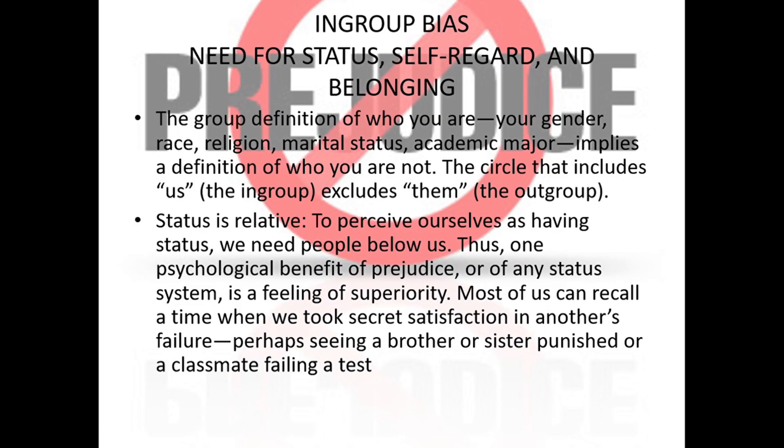The factors of in-group bias, need for status, self-regard, and belonging also cause prejudice. The group definition of who you are — your gender, race, religion, marital status, academic background — implies a definition of who you are not. The circle that includes us, called the in-group, excludes them, called the out-group.